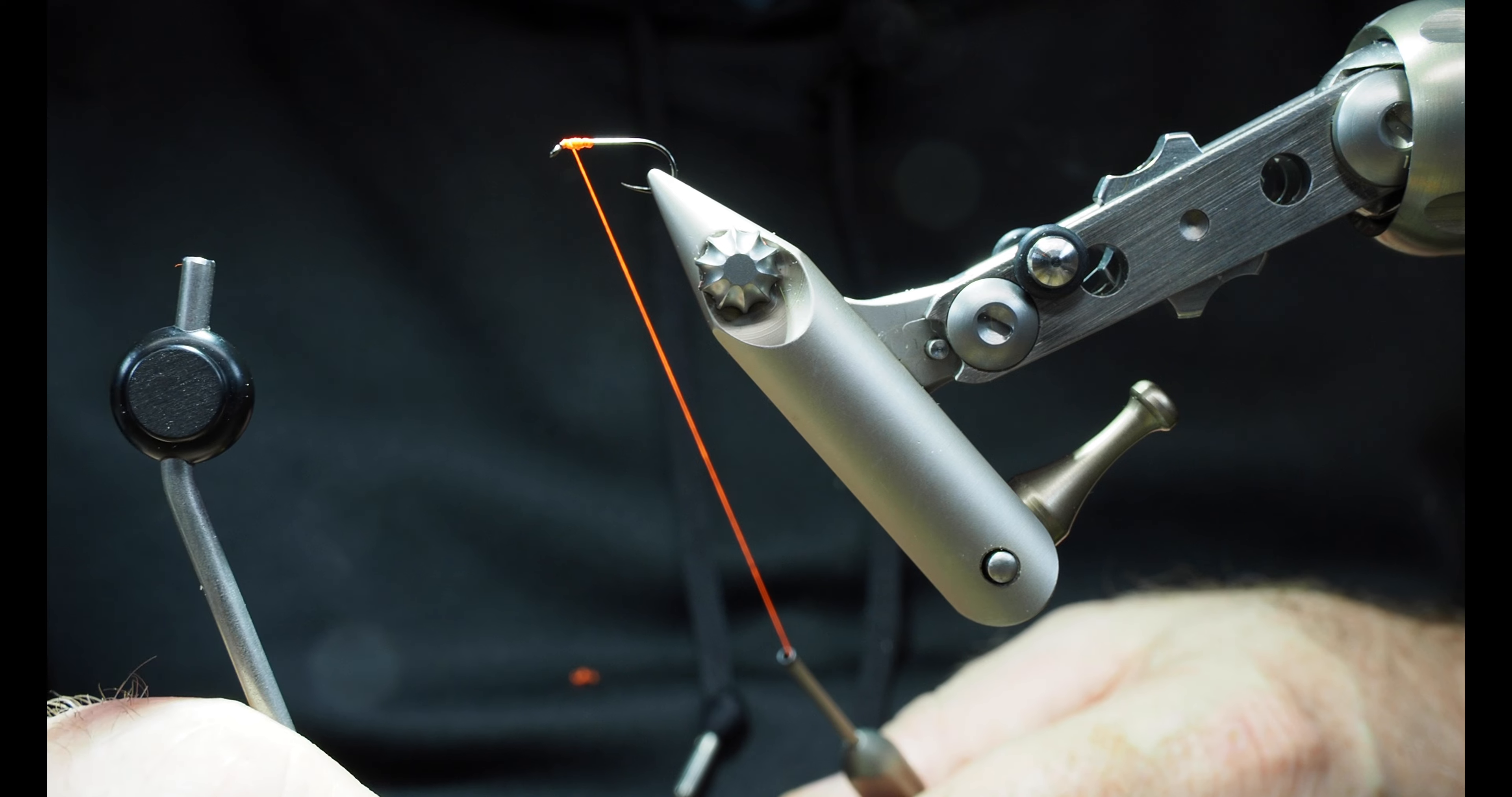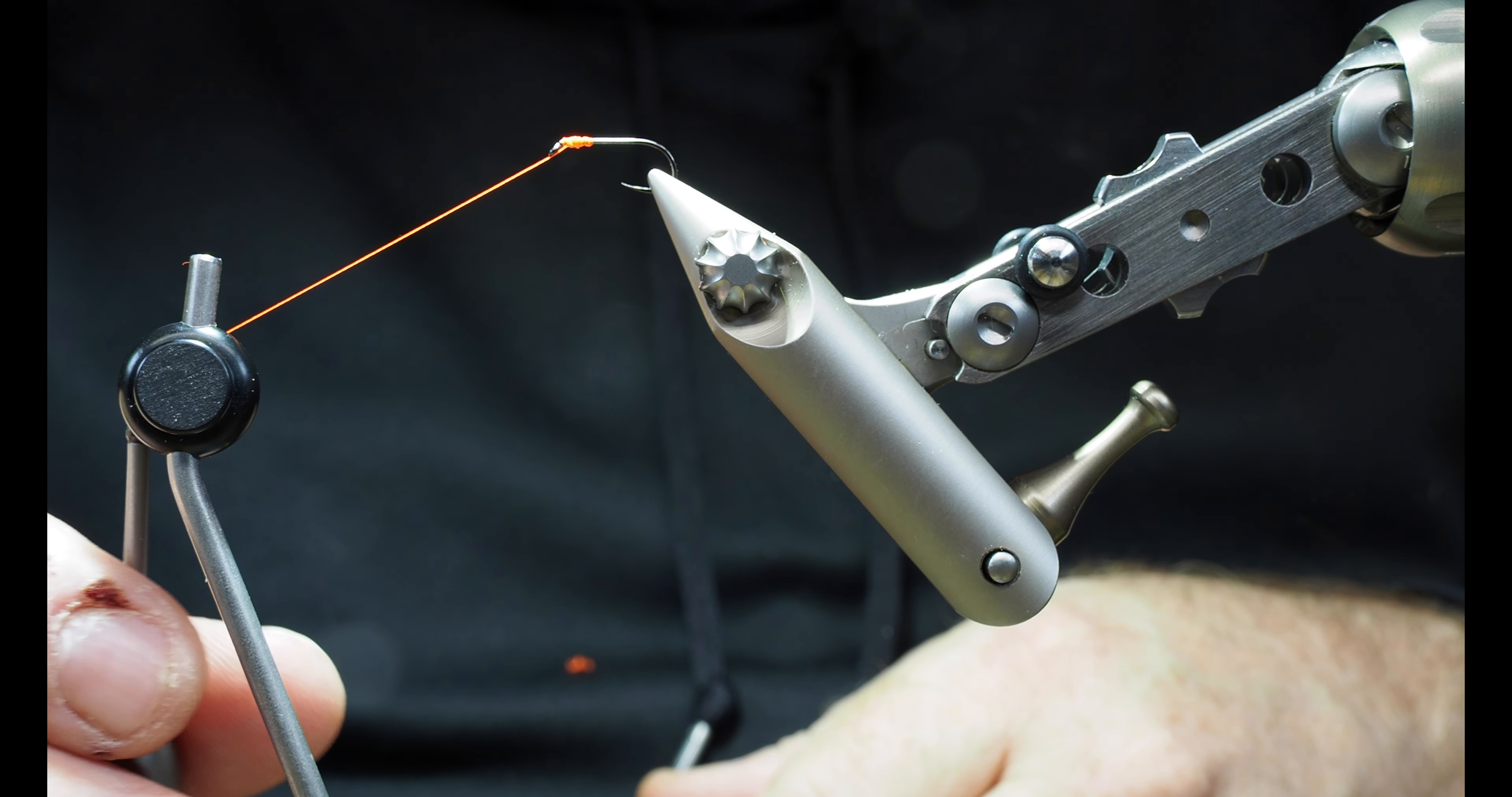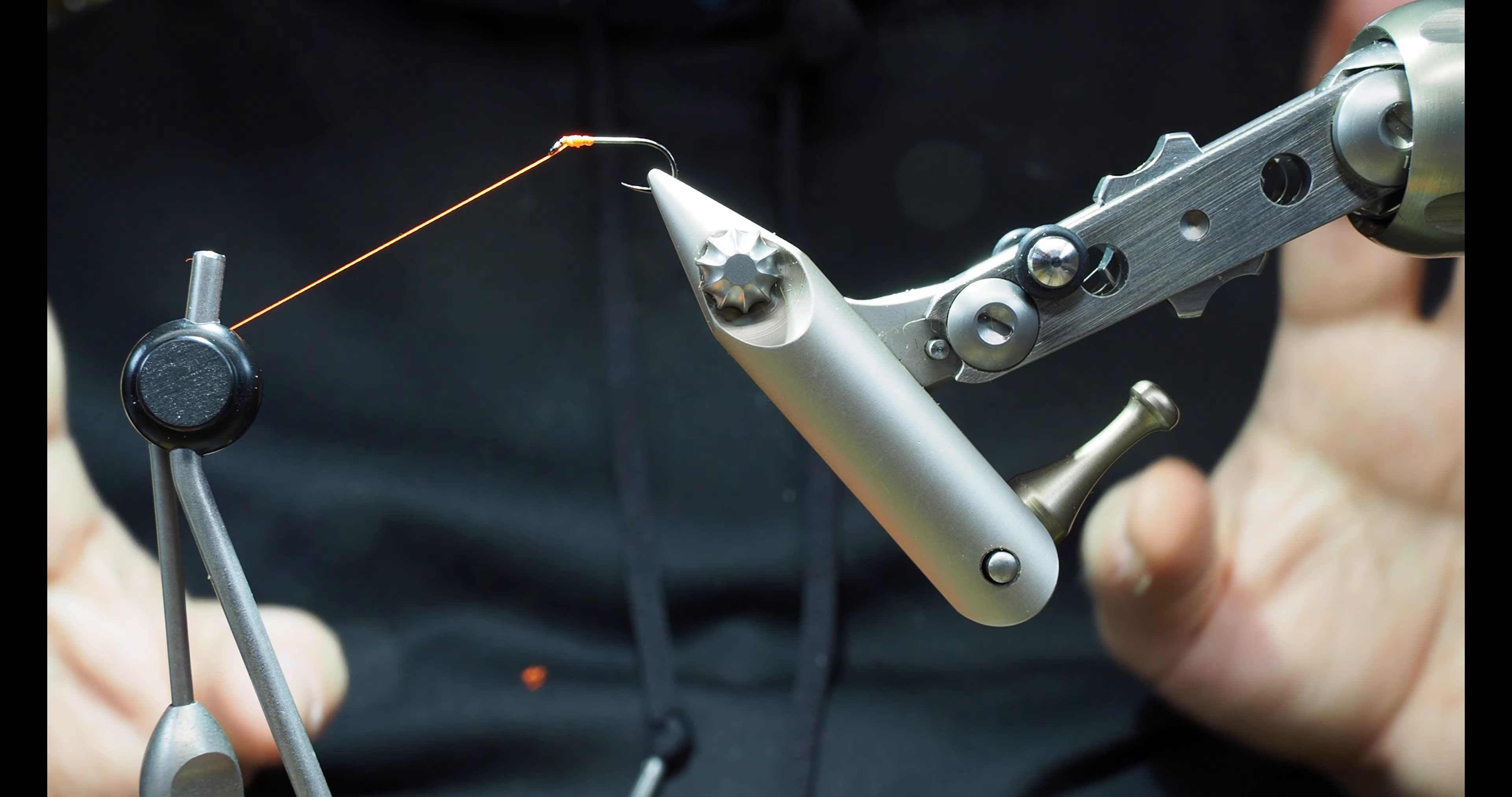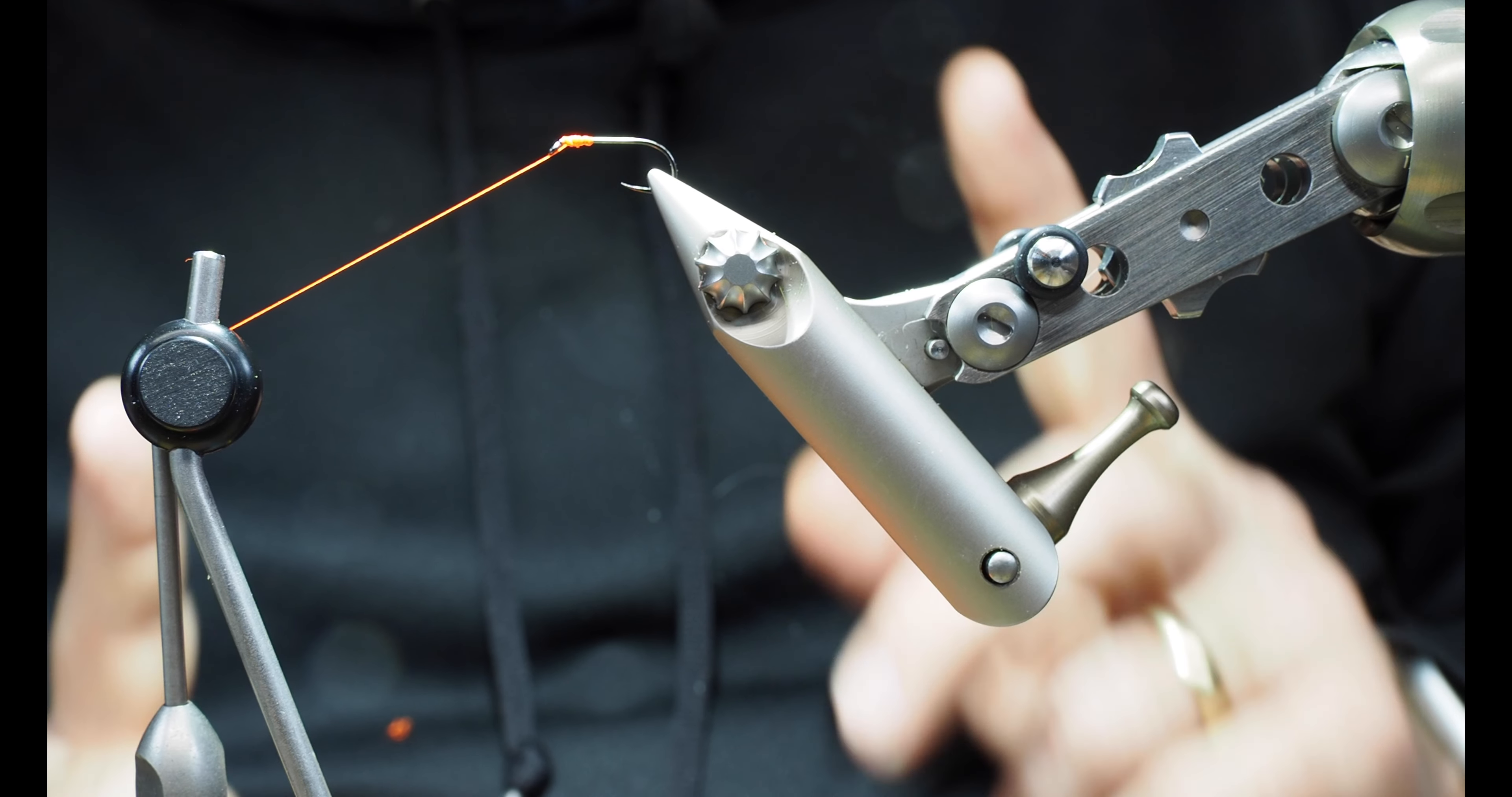This is where, again, I showed in an earlier video, this is the bobbin cradle here that I just moved back into position. That's how you use the bobbin cradle. Right now I'm hands-free, and you can see the thread is completely out of the way if I'm working on other materials here on the fly.